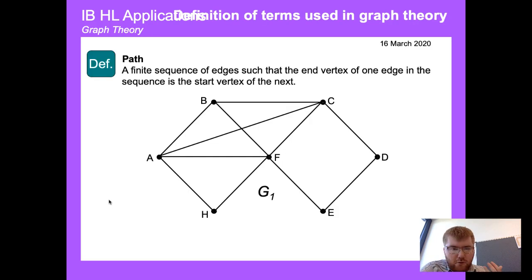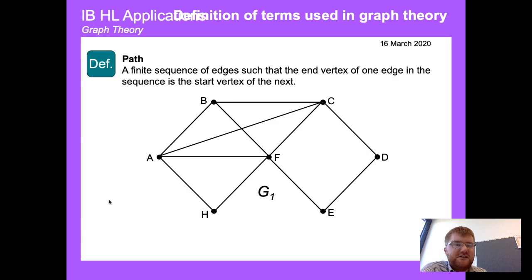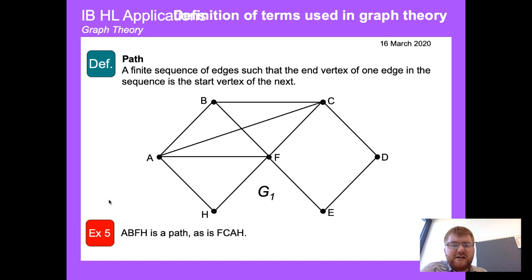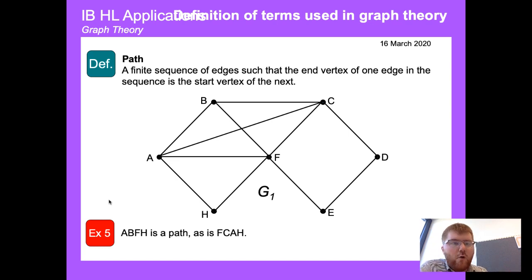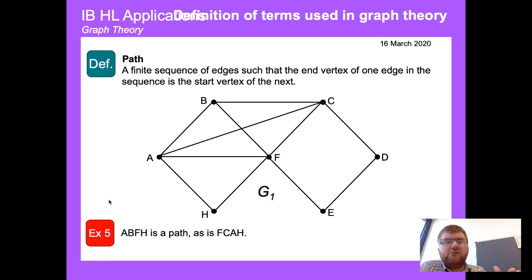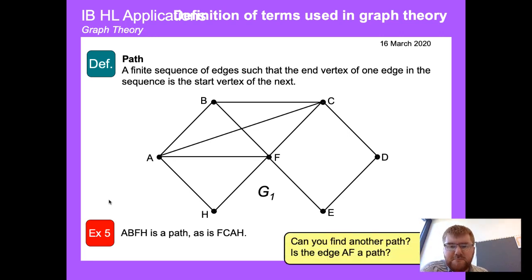A path is a finite sequence of edges such that the end vertex of one edge in the sequence is the start vertex of the next. For example, A-B-F-H is a path, F-C-A-H is a path, and B-F-E-D is also a path. It's quite intuitive — it's just a route around a graph.